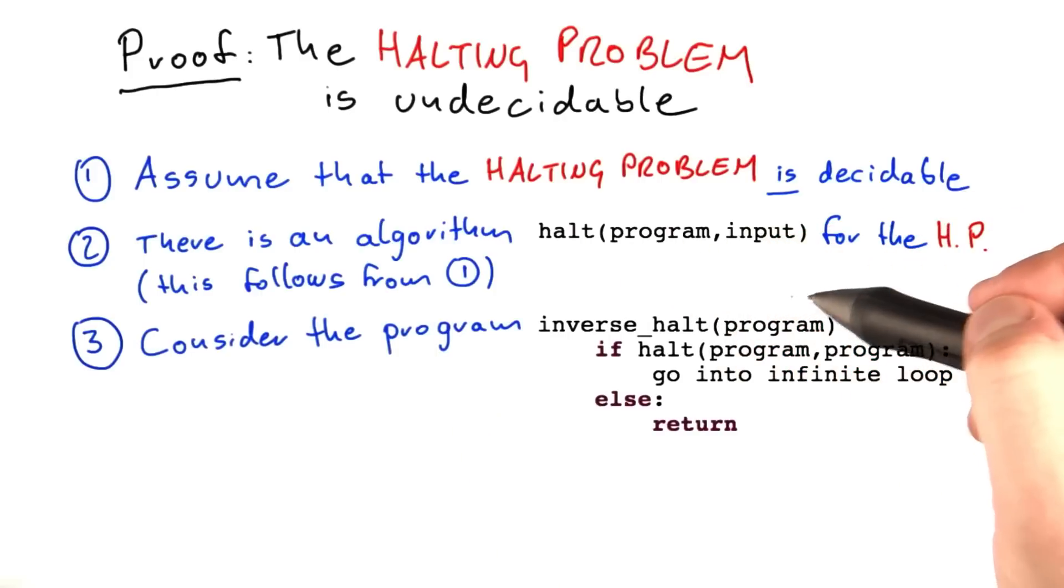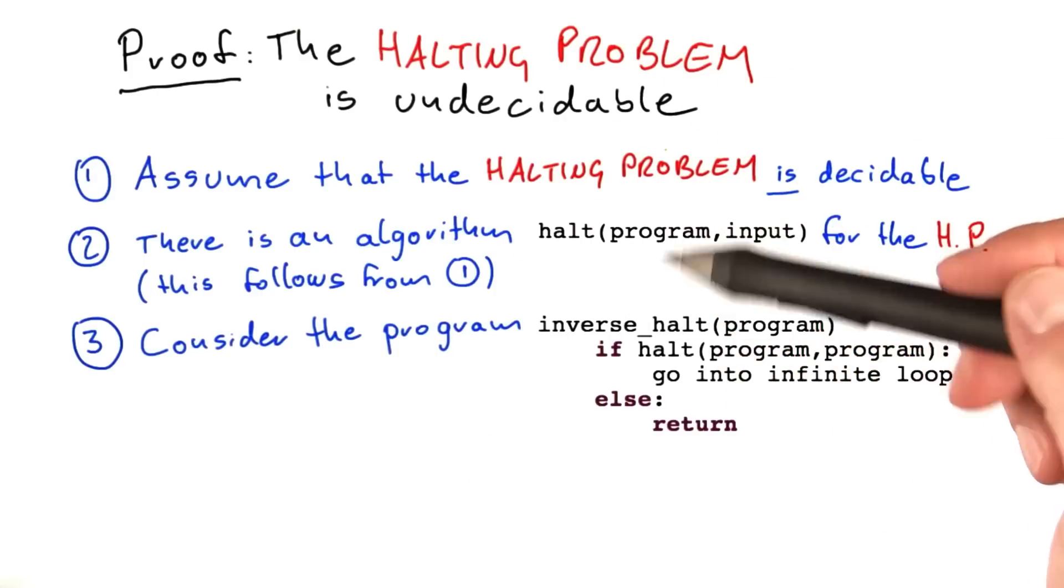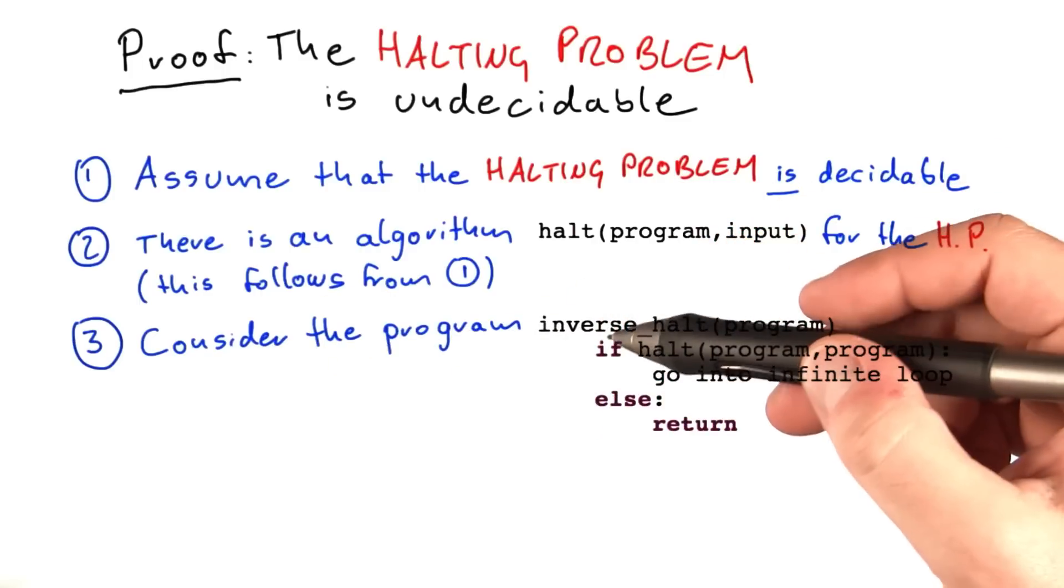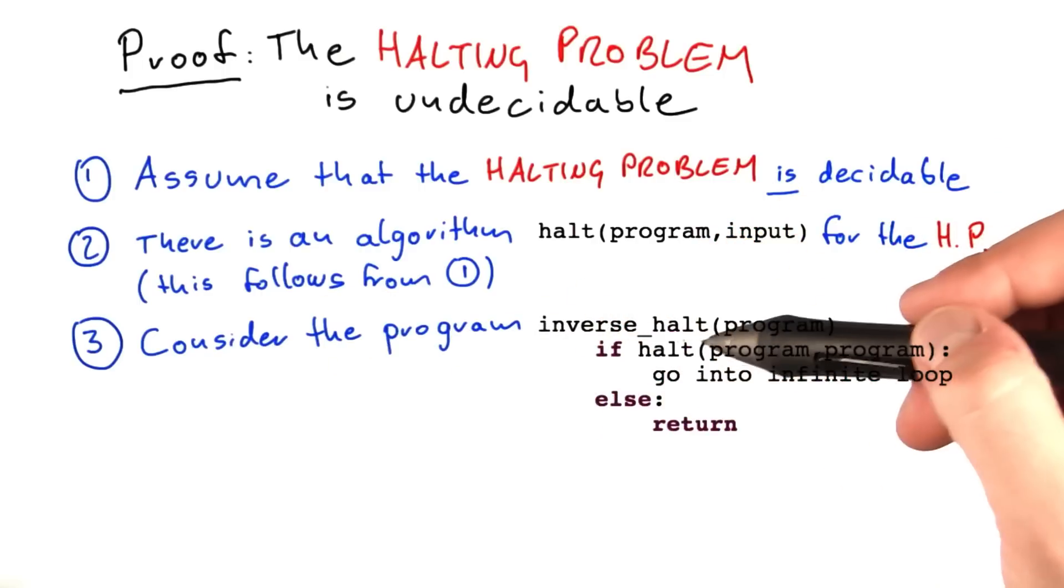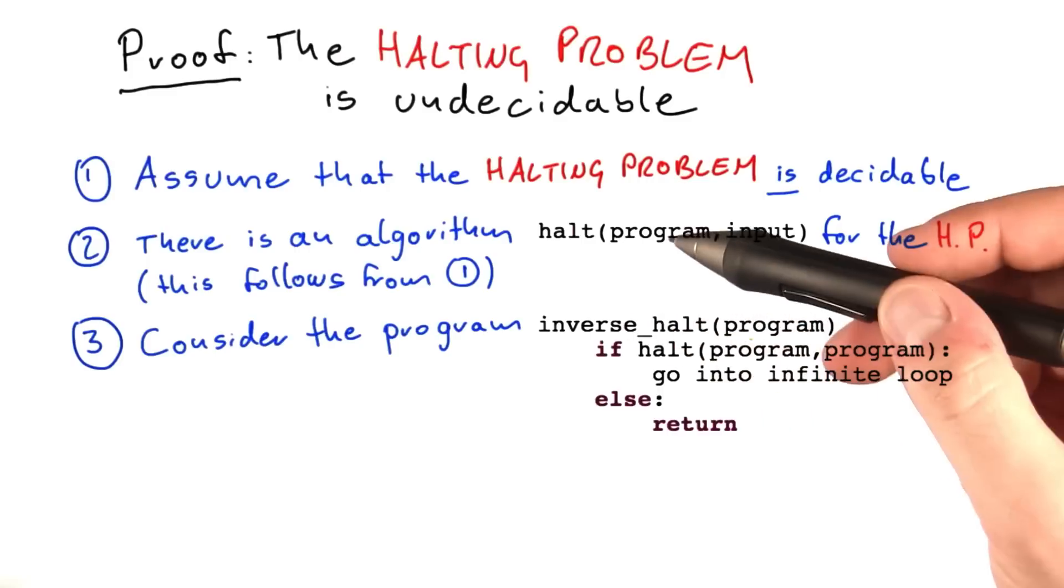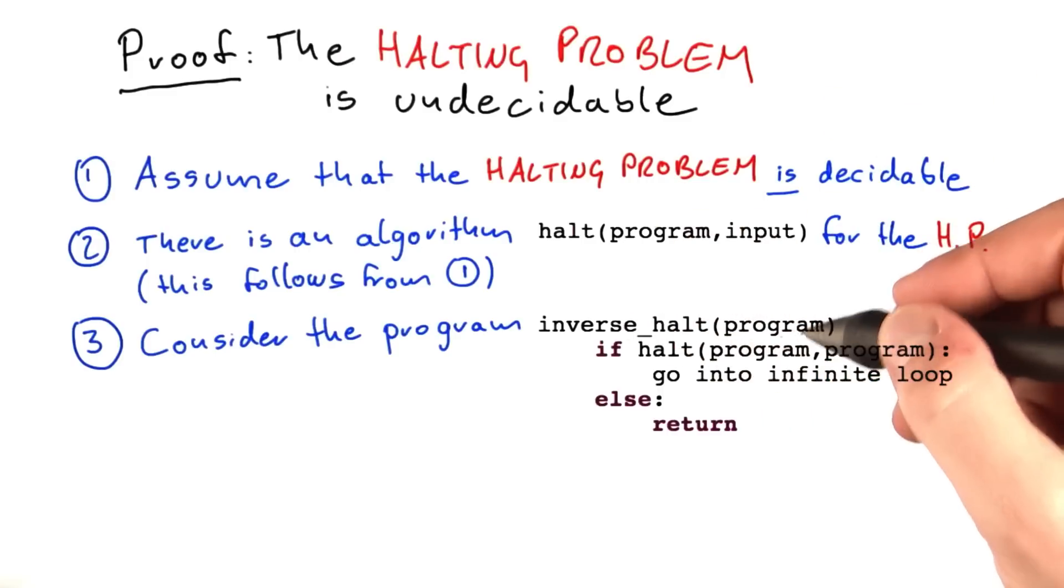So now that we assume that we have this halt algorithm, what we're now going to do is something sneaky. And this will lead us to the proof by contradiction. We're going to write a program that uses this algorithm here. And this program I call inverse-halt. Inverse-halt takes as input a program, so not a program and input, but just a program.